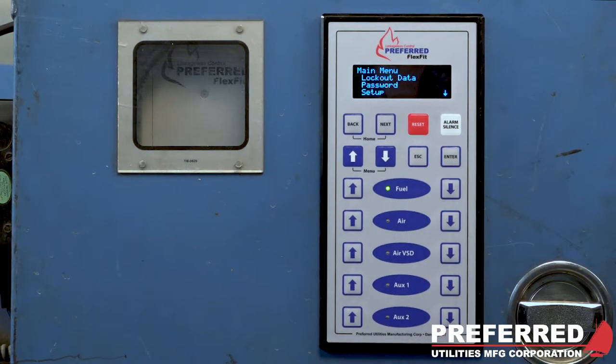The different menus that you can access are lockout data, where you can see 140 different data points from your last 10 lockouts. Your password menu, where you would enter whether operator, technician or engineer passwords, which will allow more or less access into the menus and to setup.